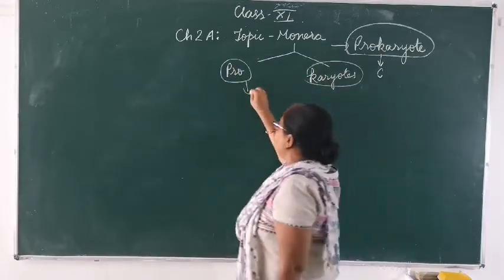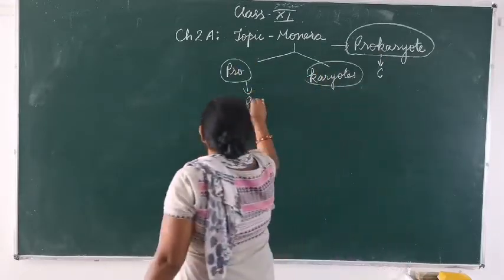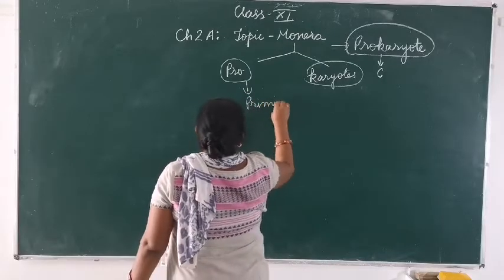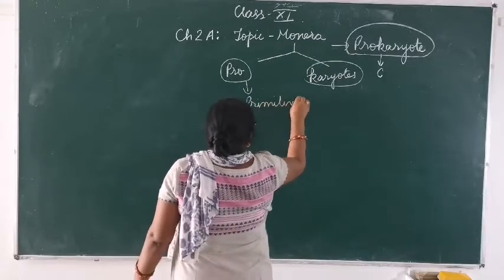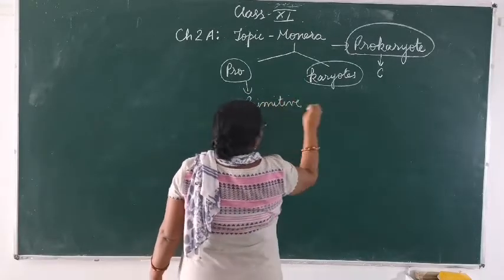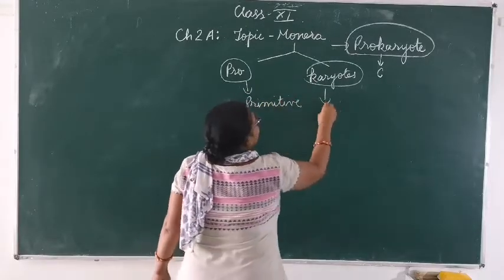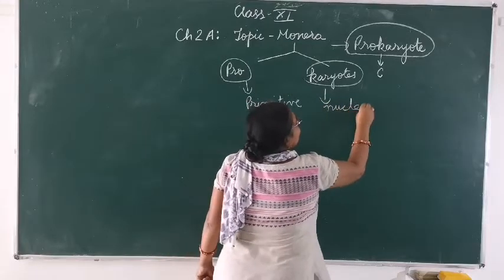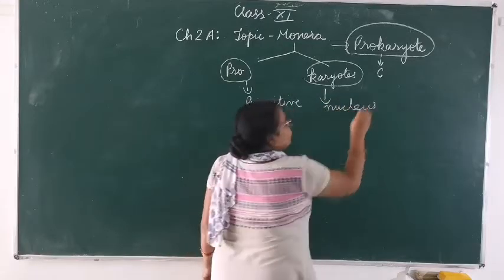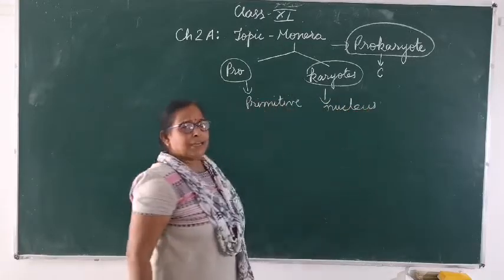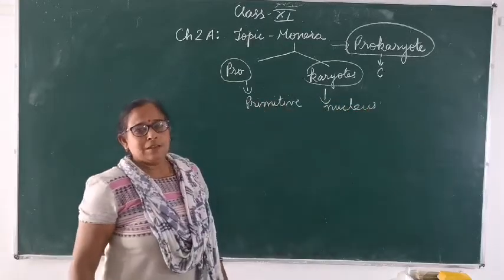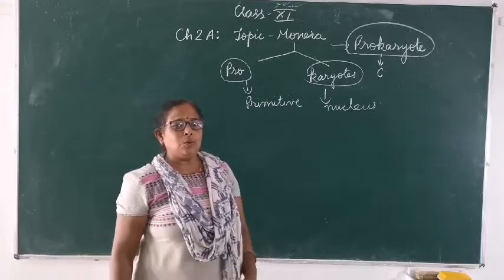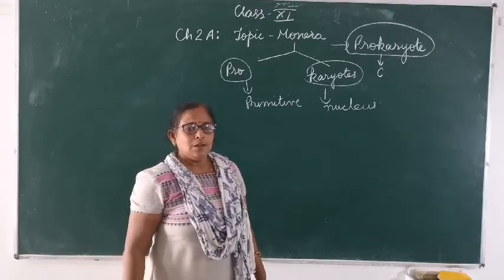Pro means primitive. And karyon means nucleus. Now you will get confused — which nucleus is known as the primitive nucleus?